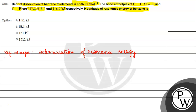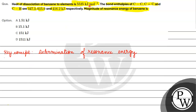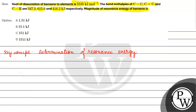So we have experimental data. The heat of dissociation of benzene given is 5535 kilojoule per mole — this is our experimental data. Now if we theoretically calculate using bond energies, let's find out delta H of dissociation.